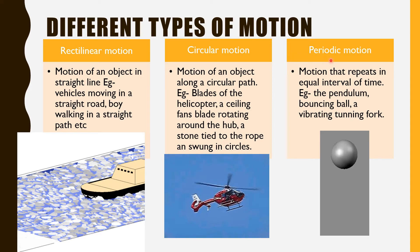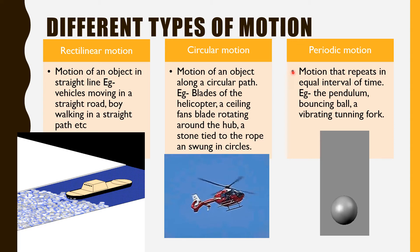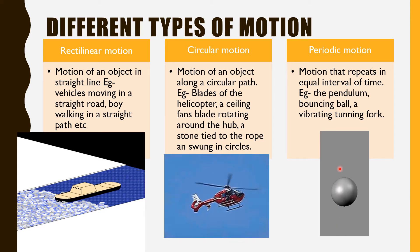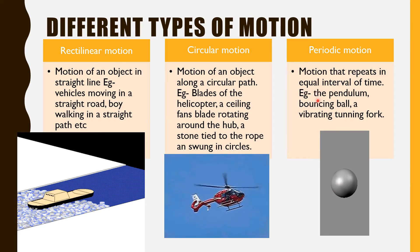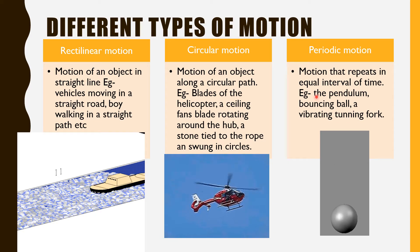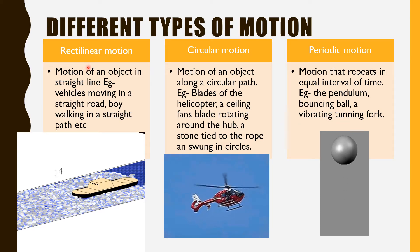Next is periodic motion — motion that repeats in equal intervals of time. For example, a bouncing ball bounces in equal intervals of time. More examples include the pendulum, bouncing ball, and vibrating tuning fork. These are the periodic motions. So you have learned about different types of motion.